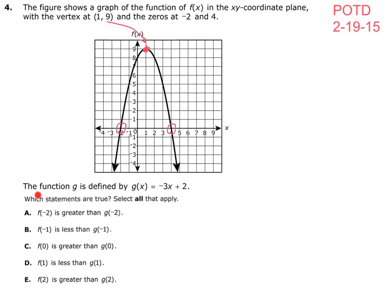The function g is defined by g of x equals negative 3x plus 2. So we have a whole other function g of x, and it equals negative 3x plus 2. They want us to tell which statements are true — select all that apply — so there may be more than one.